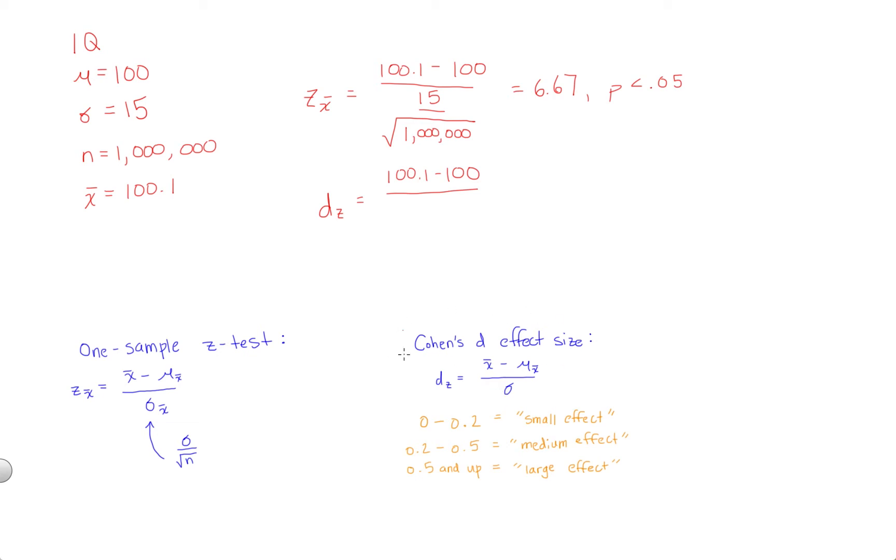In fact, effect sizes don't care at all how many participants you collected as part of your sample. This is what makes it unique and different than hypothesis tests. So in this case, you're going to get 100.1 minus 100 over 15. This is going to come out to a very tiny value, 0.007. It's essentially a small effect. And in reality, it's so close to zero that we would almost say there's no effect at all.